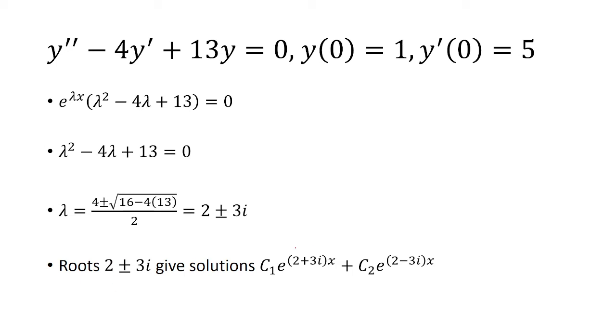Whatever the roots are is what the exponent is going to be. So there's two roots, so that means there's two terms here. We have c₁e^(2+3i)x and c₂e^(2-3i)x.